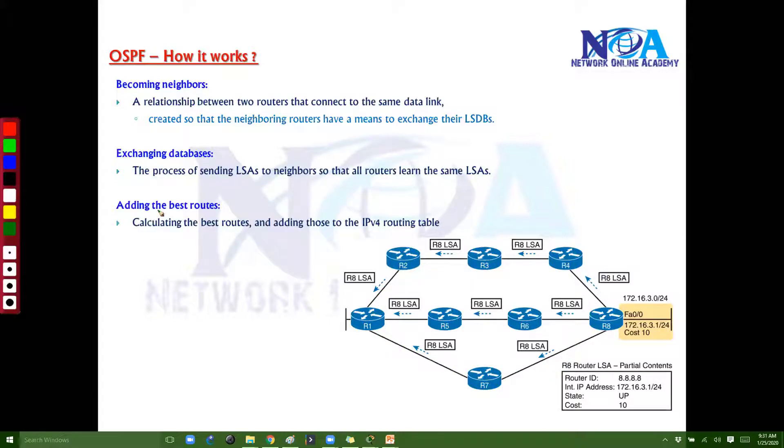Once they advertise their own LSAs to all the neighbors and once they come to know, then probably based on these LSAs again, they will figure out how many possible routes are there. Based on that, they will decide anyone as a best route.